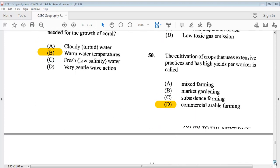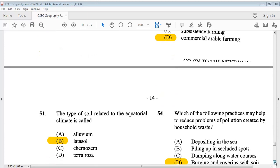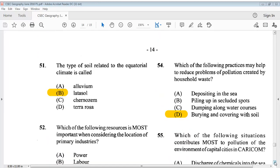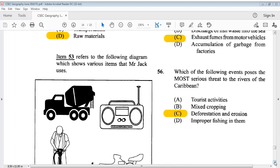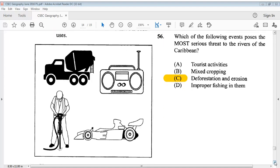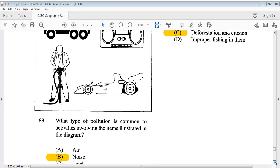Question 50: The cultivation of crops that uses extensive practices and has high yields per worker is called? D, commercial arable farming. Question 51: The type of soil related to the equatorial climate is called? The answer is B, laterite soil. Question 52 says, which of the following resources is most important when considering the location of primary industries? The answer is D, raw materials. Item 53 refers to the following diagram, which shows various items that Mr. Jack uses. There they are. Question 53: What type of pollution is common to activities involving the items illustrated in the diagram? We know that it's B, noise pollution.